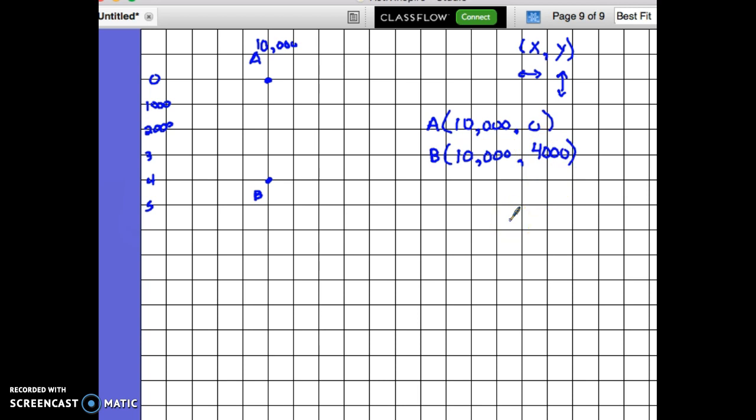All right, after you get the ordered pairs, it's really asking you how far apart are those two points. What is the distance from point A to point B? Well, since it's straight down, this one is pretty much countable. It looks like we just go down 4,000 feet. So distance between those two points is 4,000 feet. Simple enough.